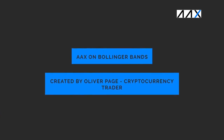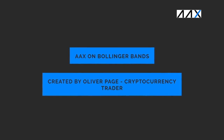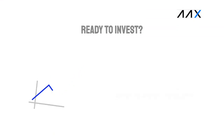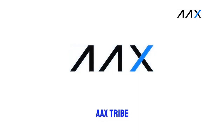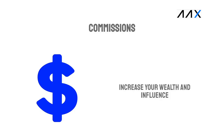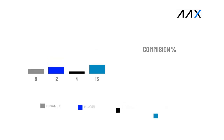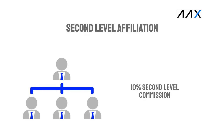Thank you for watching this video on Bollinger Bands with the AAX Exchange. I hope that you managed to take something away and learn a bit more about Bollinger Bands. Now let's quickly talk about a new feature on AAX called the AAX Tribe. The AAX Tribe is an affiliation scheme which AAX have recently released. It allows you to receive commissions from traders who join the AAX Exchange through you — when they trade, you earn. AAX offers an extremely competitive referral scheme, with you earning 40% from your tribe members' trading fees, plus an extra 10% from second-level affiliates, meaning as your network of traders expands, so does your tribe and your commissions.